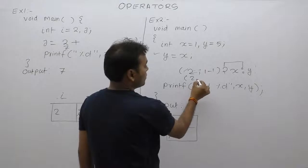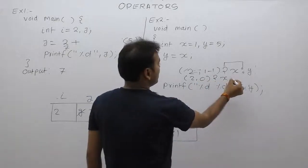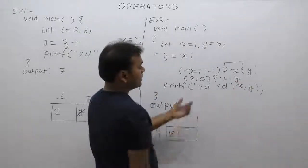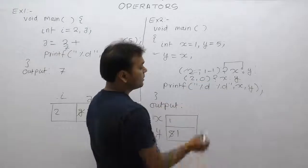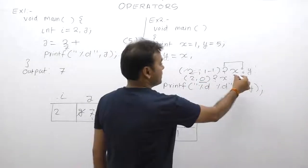2 comma 0 comma question mark x comma colon y. In that case condition test, bracket case, bracket case, last value which is 0, 0 means false, false case return y,